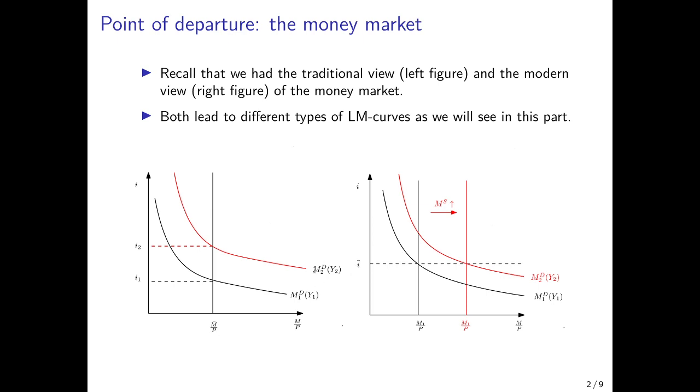If incomes increase, the money demand curve shifts upwards here and we have an intersection with the money supply curve at a higher interest rate. So in this traditional view, the interest rate adjusts and the money supply stays constant. In the modern view depicted on the right side, it's the opposite.